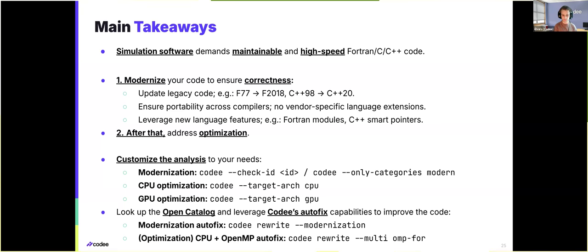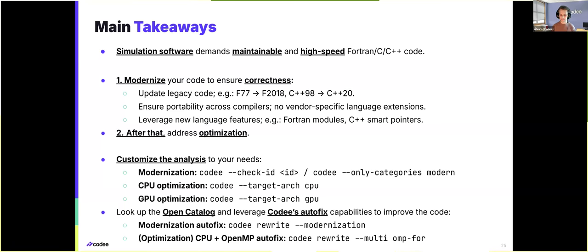As we saw in these examples — for instance with the modernization checks related to Fortran code, as well as by generating OpenMP and OpenACC pragmas to automatically parallelize the code. During the upcoming labs, don't forget to use at all times the documentation available in the open catalog, and check out the details and code examples to understand how CodeE is trying to improve your code, as well as use all the autofix capabilities when available to automatically improve the code.